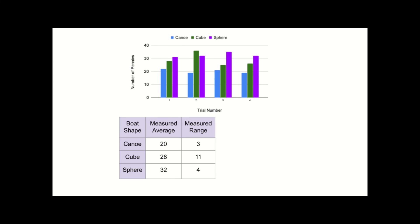The cube had the largest deviations as seen by the range of 11 but it did have the highest single value at 36 although the average was 28. The sphere was also pretty reliable it has a range of 4. It had a high average of 32 and it was always above 30 pennies.